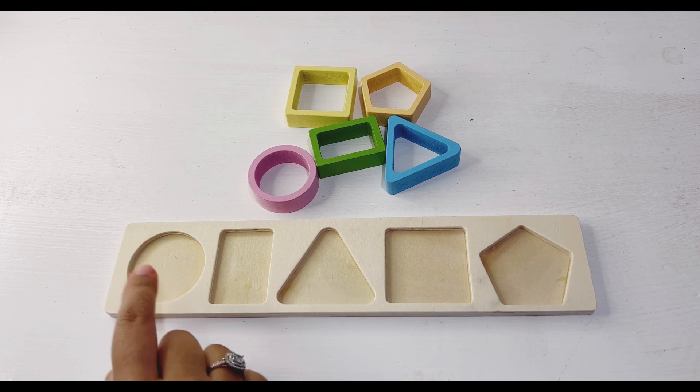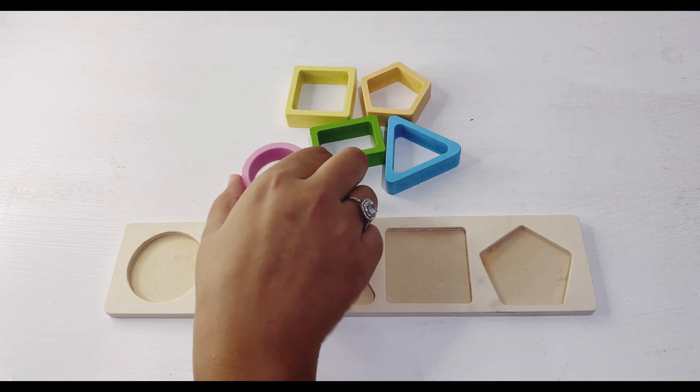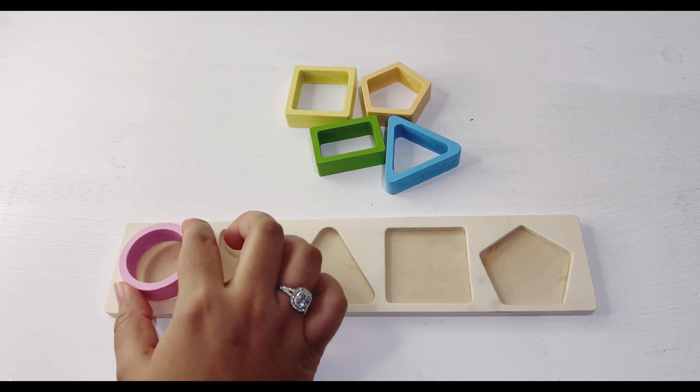First shape is circle. Let's find circle from the shapes. There you go, I got it. Let's put it in the right place on the board.